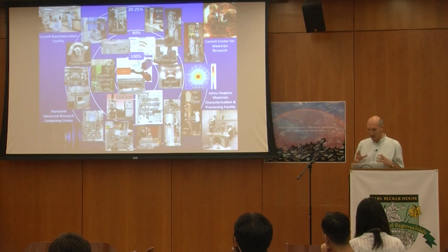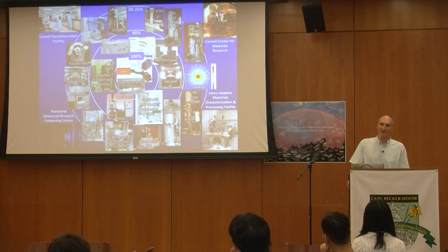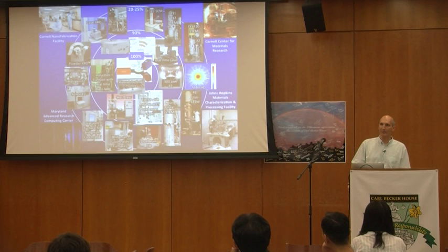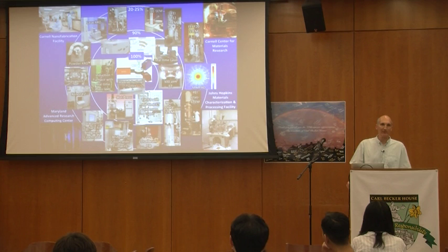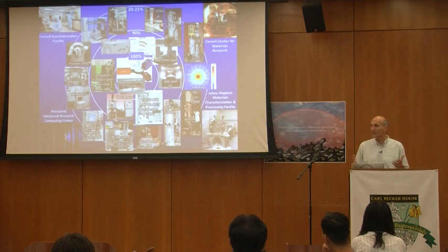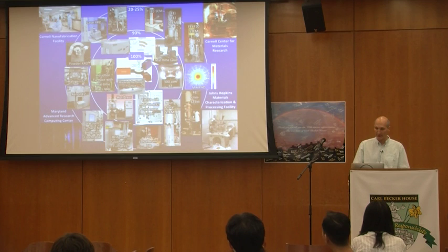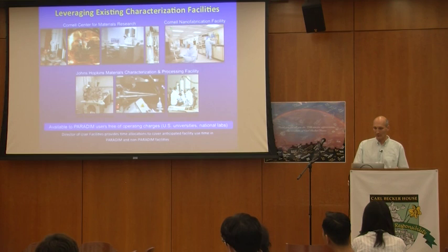Paradigm also allows access to many existing facilities at Cornell as well as at Johns Hopkins — things like the Cornell Nanoscale Fabrication Facility (CNF) and the CCMR Center for Materials Research, with all their analytic capabilities and abilities to pattern films. Maybe you want to make a new material and pattern it into some structure to make transport measurements or optical measurements. All that can be part of your proposal, and it can all be free — leveraging these existing facilities in addition to the new theory, synthesis, and characterization facilities.